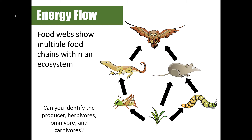A food web can also depict energy flow in an ecosystem, but a food web is different from a food chain because it's more complex — it shows multiple feeding relationships within an ecosystem. Pause the video now and see if you can identify the producer, herbivores, omnivore, and carnivores in the picture. We have our producer, herbivores, two carnivores, and then the mouse will be our omnivore.